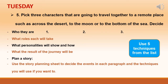Time to write. Pick three characters that are going to travel together to a remote place such as across the desert, to the moon or to the bottom of the sea. Who are they? What roles will each one take on the journey? What personalities will they show, and how and what will happen, and what will be the result of the journey? Plan a story using the story planning sheet to decide the events in each paragraph and the techniques that you'll use if you want to.